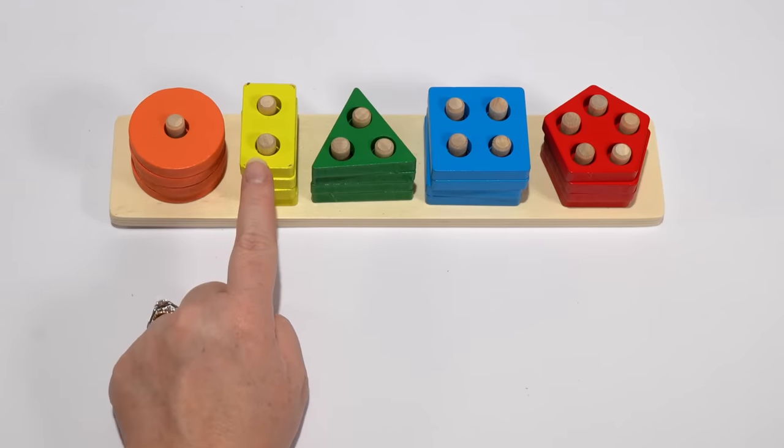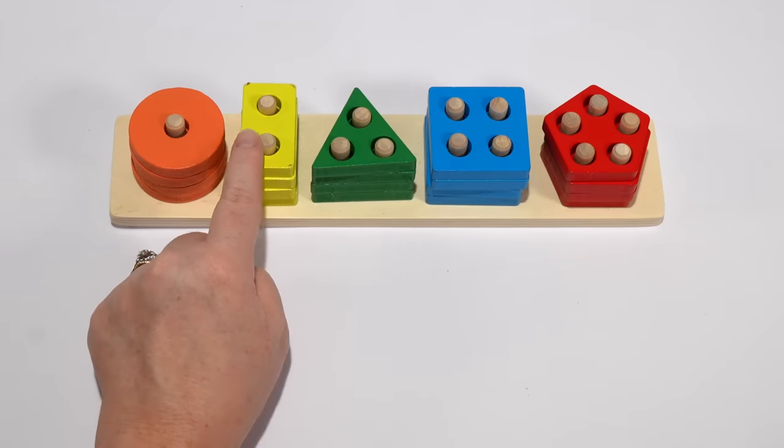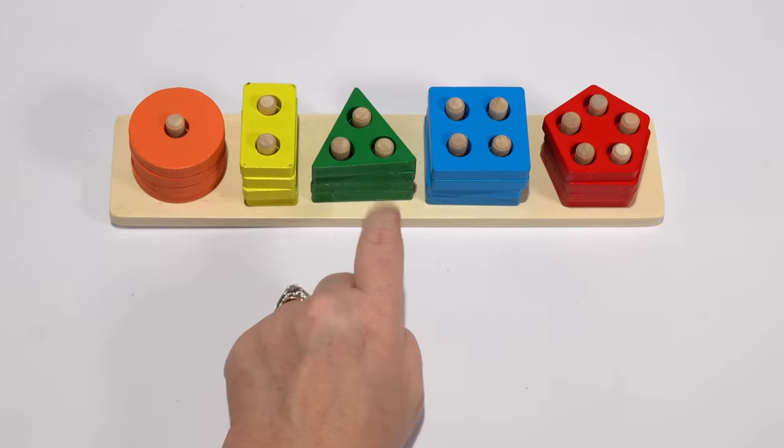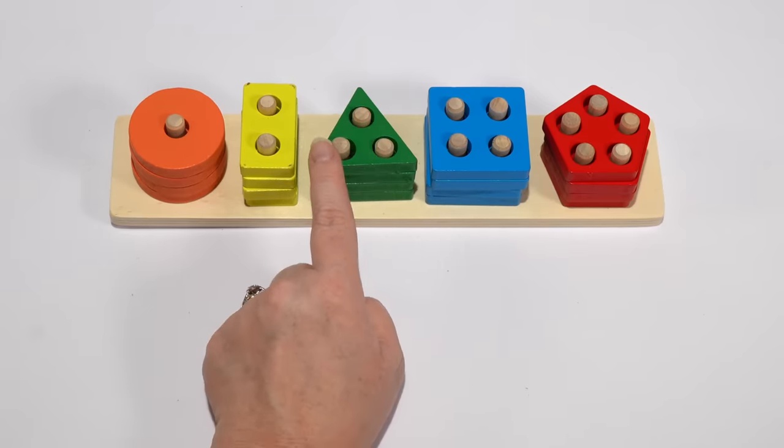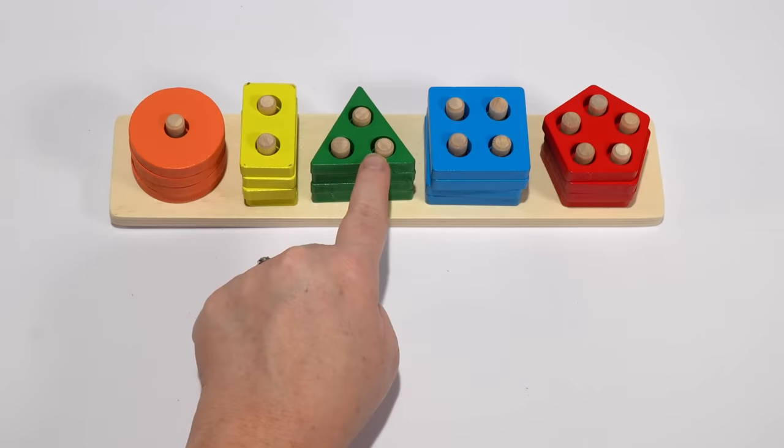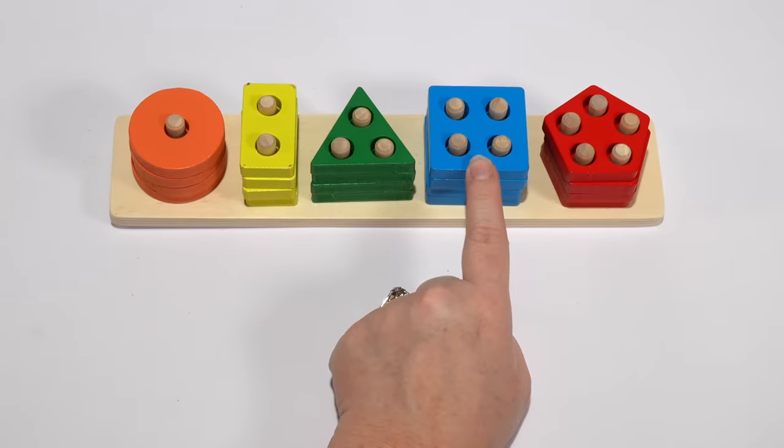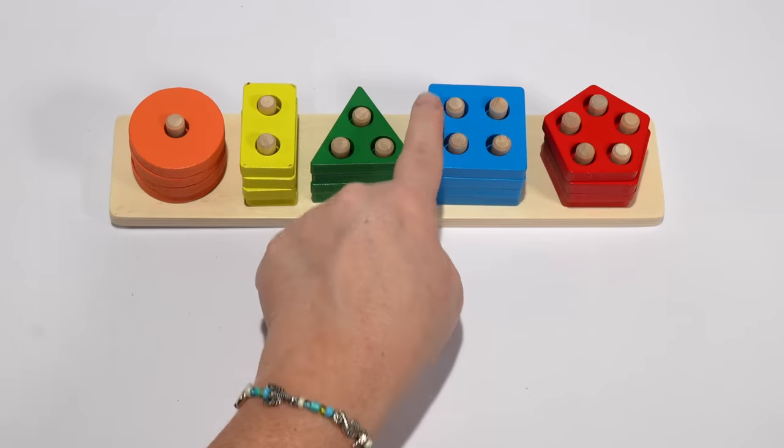A yellow rectangle with two holes. A green triangle with three holes. A blue square with four holes.